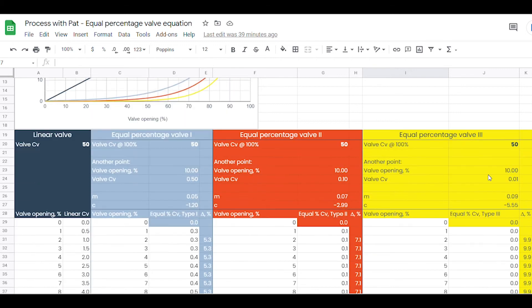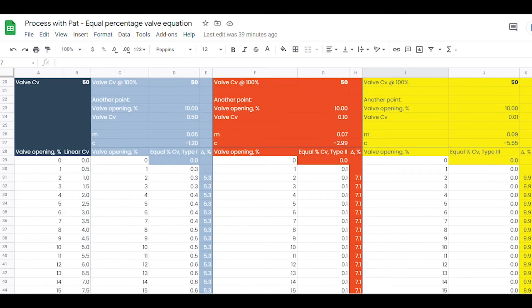The first valve has a constant 5.3% increase in flow for every additional percent valve opening. The second valve increases flow by 7.1% for every additional percent valve opening.